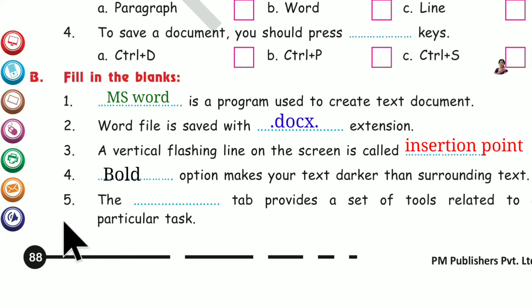Number 5. The dash tab provides a set of tools related to a particular task. Which tab? Ribbon tab. Ribbon tab provides a set of tools related to a particular task.